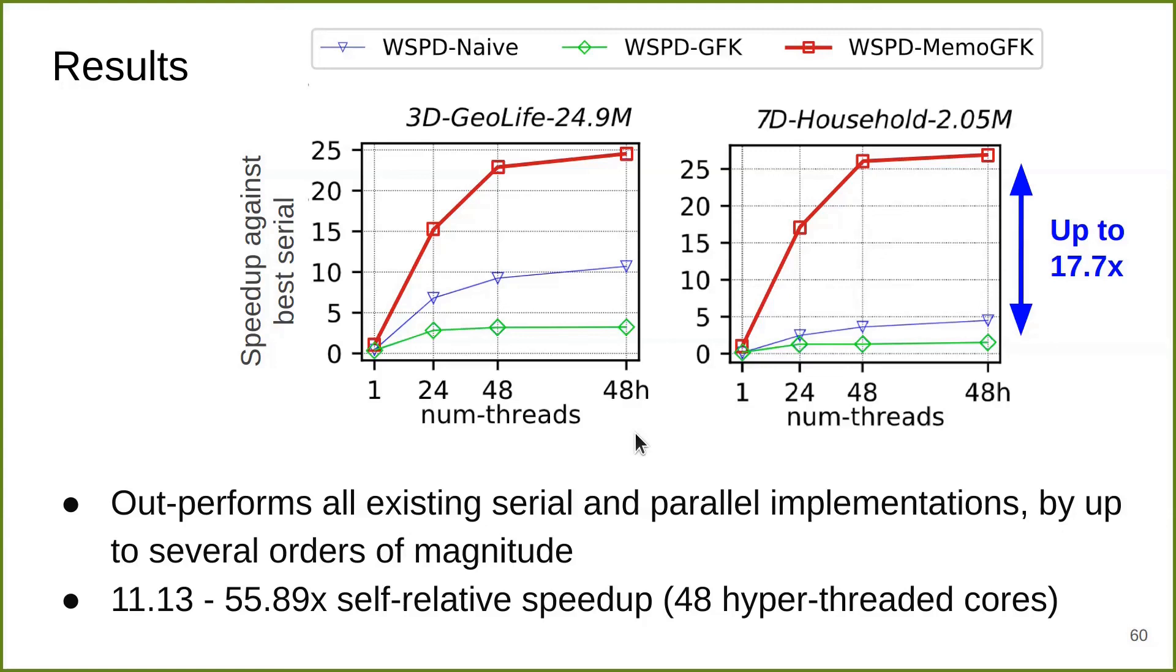We also compare with other people's implementations in previous papers. We outperform all existing serial and parallel implementations by up to several orders of magnitude. On 48 hyperthreaded cores, we achieve 11 to 55 times self-relative speedup.